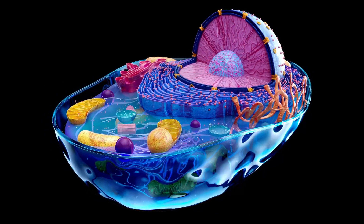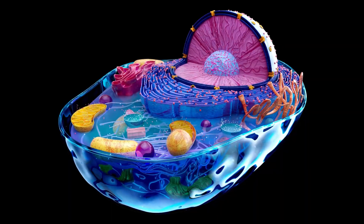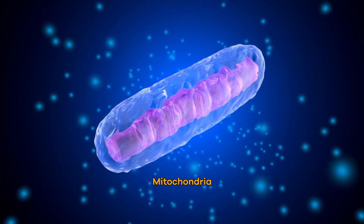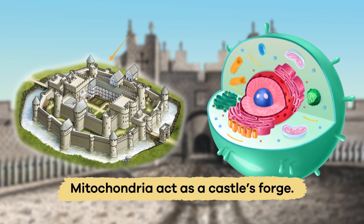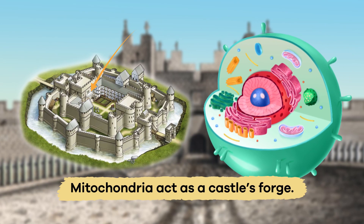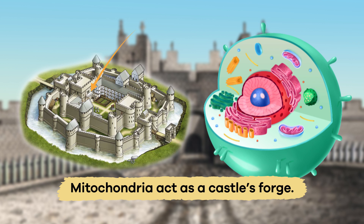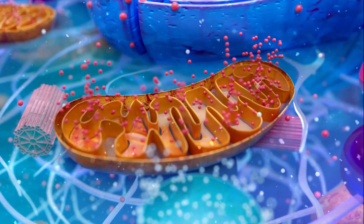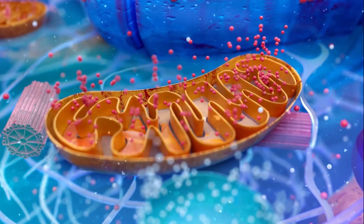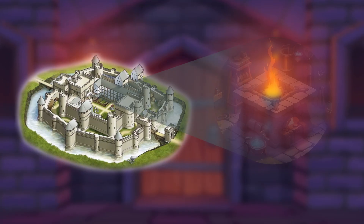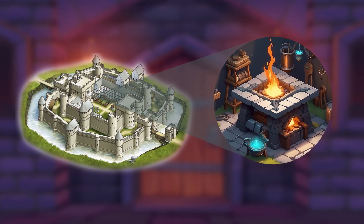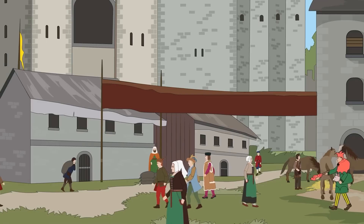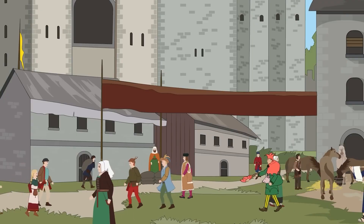Do you know what the powerhouses of a cell are? The mitochondria. Mitochondria act as a castle's forge. They make the energy necessary for a cell's operations, just like a castle forge produces heat and tools to support life within the castle.